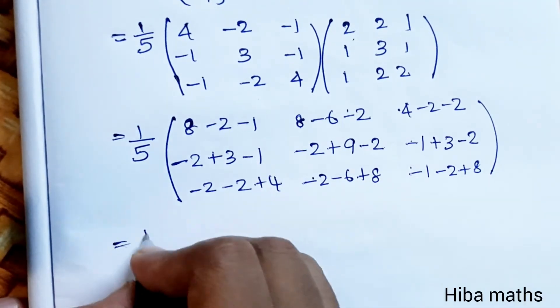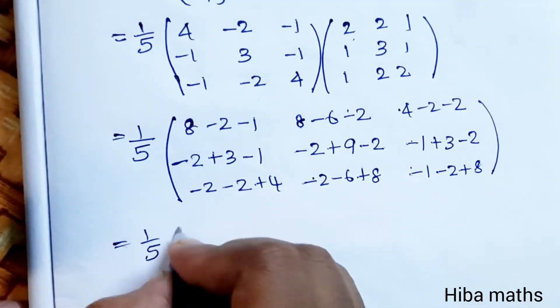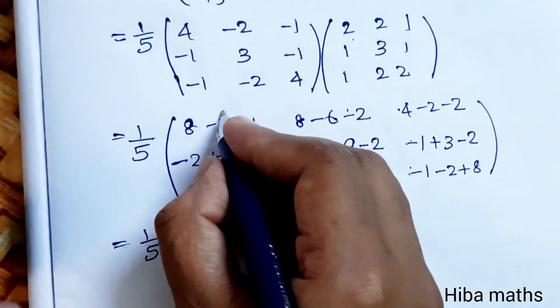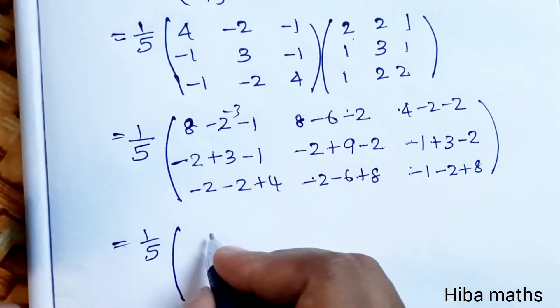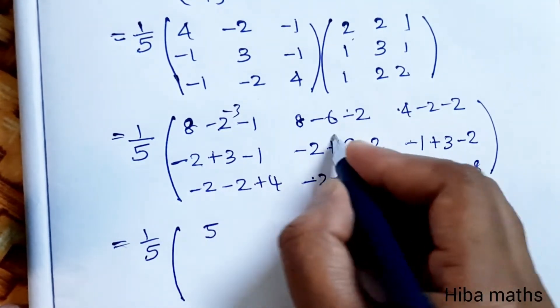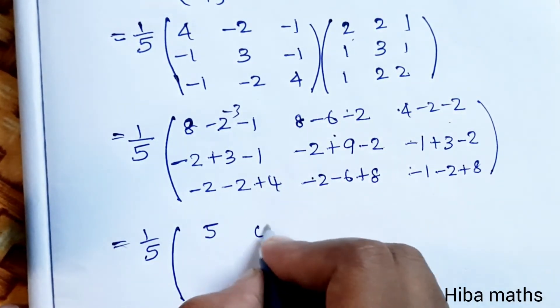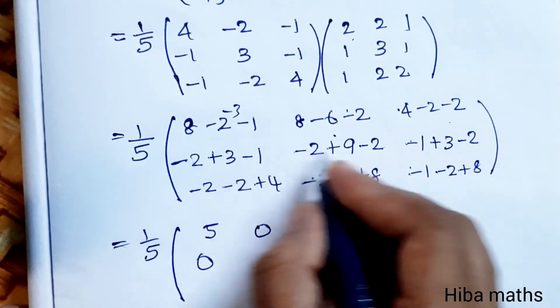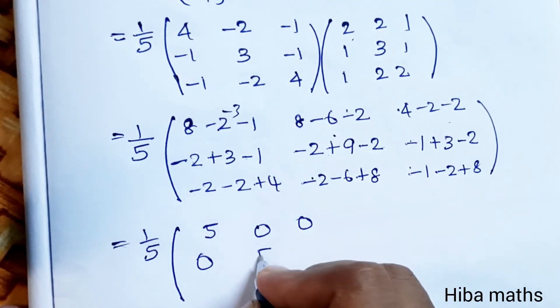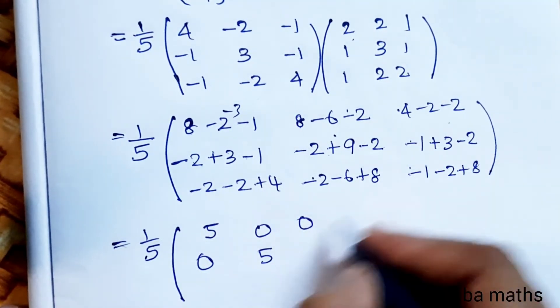Now we have 1/5 into the resulting matrix: minus 3 plus ... giving us 5, 0; 0, 5; and 0, 0, 5.